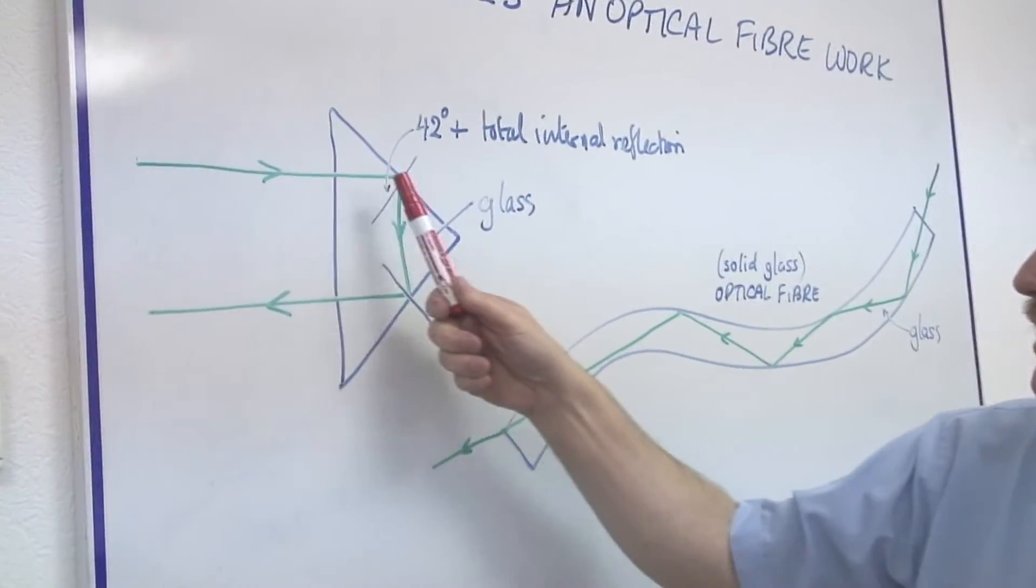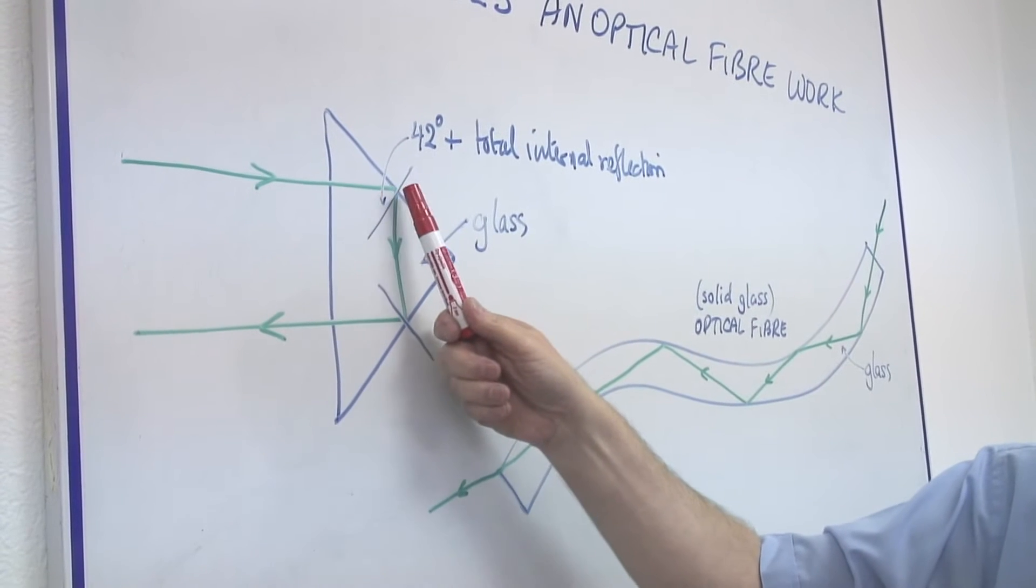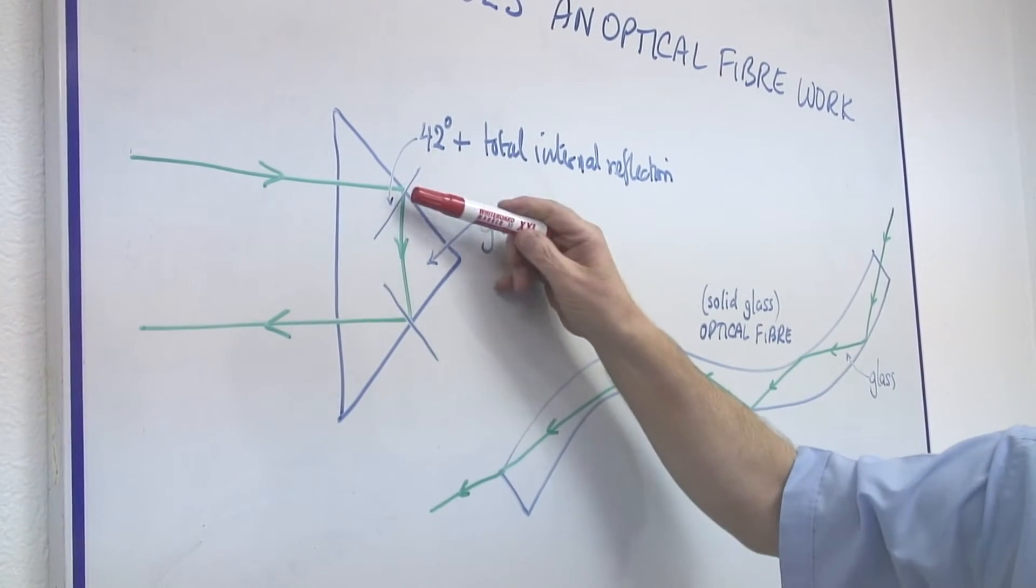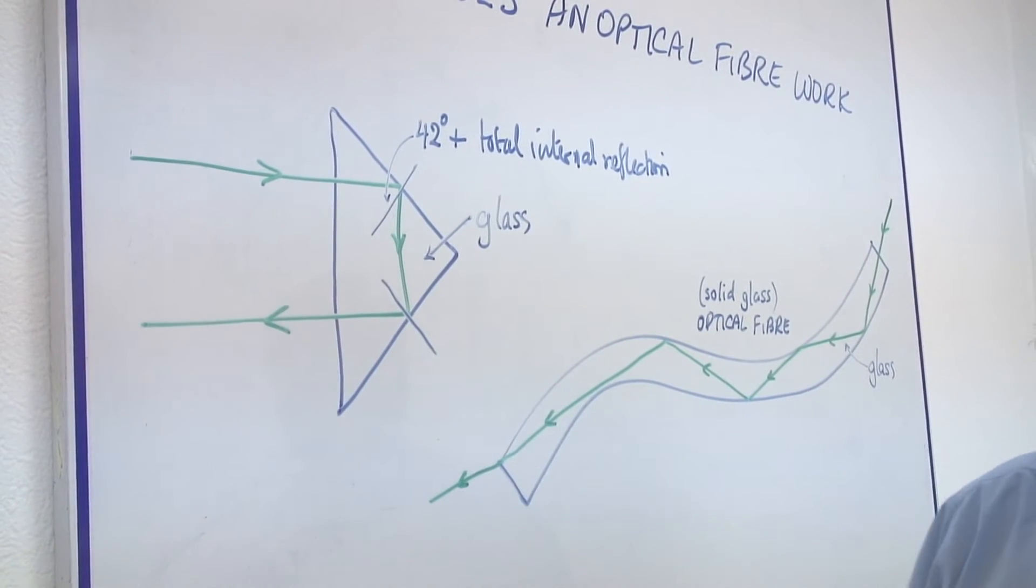If I have a beam of light coming in here, through the side, it goes into the glass, and it's reflected from the inside of the glass, and will be reflected out back the way it came.